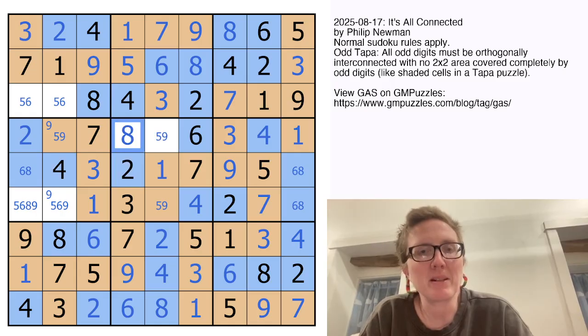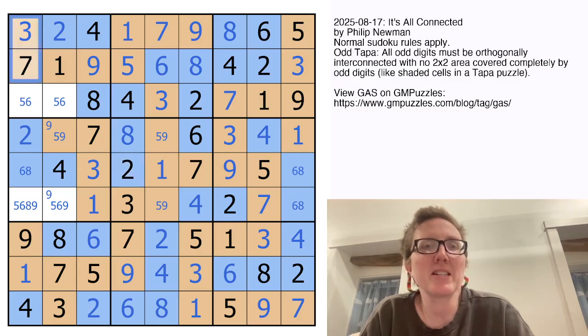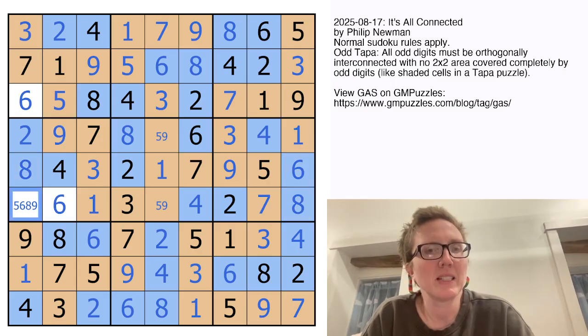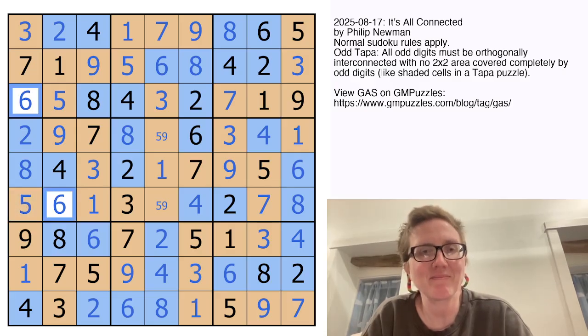This is now an eight by Sudoku, and that is either a five or a nine, and it is odd. Now we need to connect these cells at the top left through, so that has to be a five to make it part of the odd network. That's a six. That's a five, and I'm going to finish my coloring before I do the last digits. Nine and five.